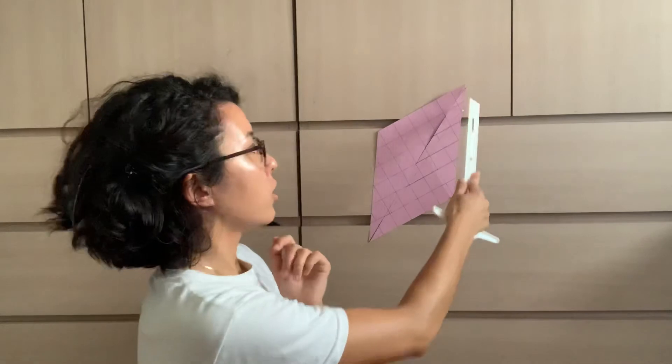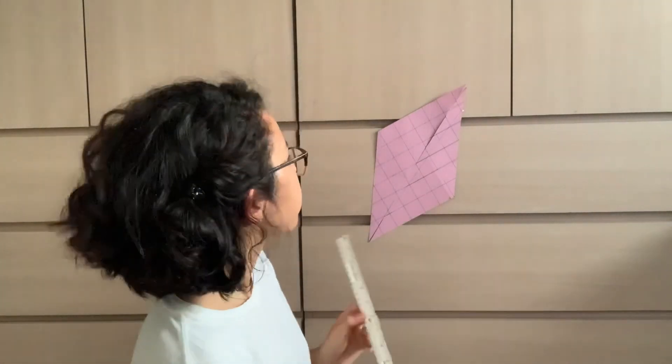The essential thing to remember is: height is always perpendicular to base. Base is always one of the sides of the parallelogram. You can choose any one you like, but make sure you're drawing the height perpendicular to the base. All right, see you tomorrow.